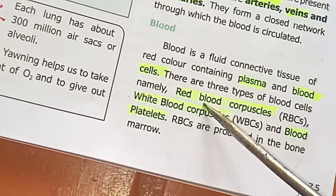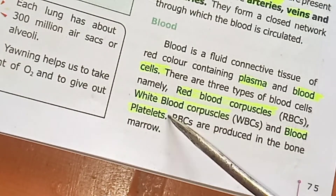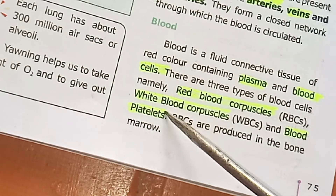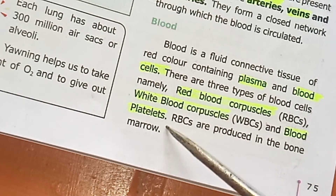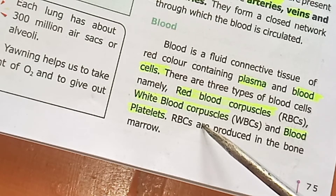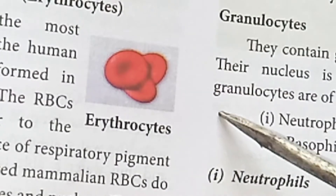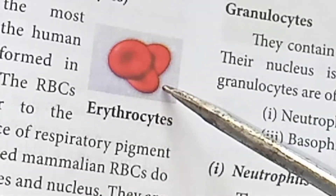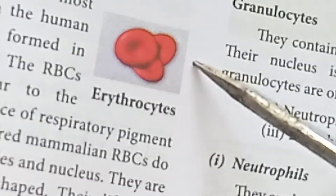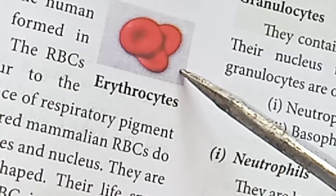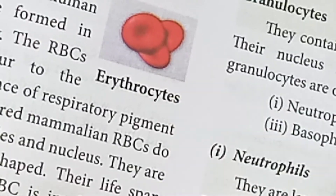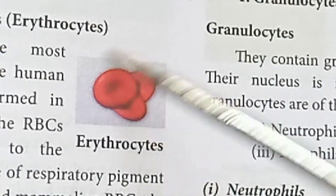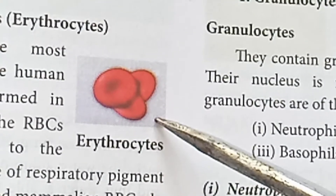There are three types of blood cells: Red Blood Cells (RBC), White Blood Cells (WBC), and blood platelets. RBCs, also called erythrocytes, have a biconcave shape and are red in color because they contain the respiratory pigment hemoglobin. They are produced in the bone marrow and have a lifespan of 120 days.